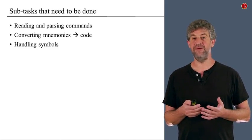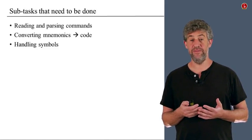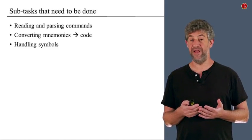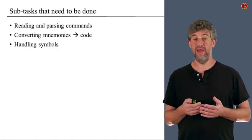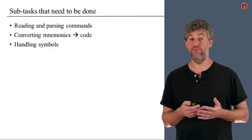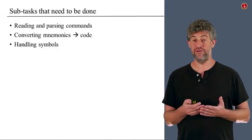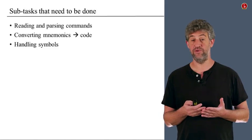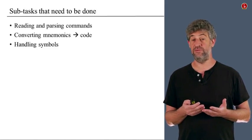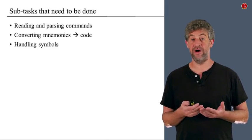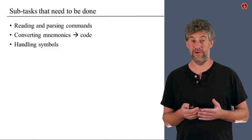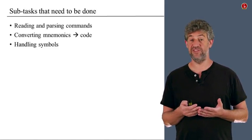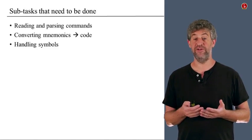Let us see what types of modules will probably be useful when we write an assembler. Three of them can be very easily identified. One is basically the parser — something that is able to read a file, get the different commands in it, and break them into parts. Another part of the code will understand how to convert a mnemonic, an assembly language command or part of one, into actual code. And of course there is another part that handles symbols — the symbol table itself.